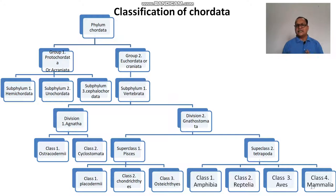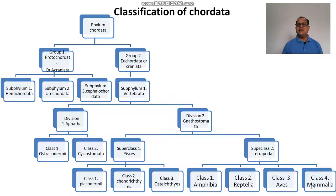Superclass Tetrapoda is divided into four classes: Class Amphibia, Class Reptilia, Class Aves, and Class Mammalia.